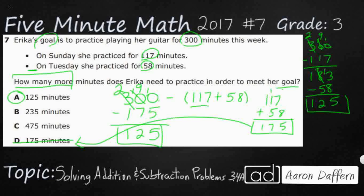Just to double-check: let's take 125, 117, and 58 — those are my three practice times — and they should add back up to 300. 5 plus 7 plus 8 is 20; carry the 2. 2 plus 2 plus 1 plus 5 is 10; carry the 1. That gives 300. There's your double-check right there.